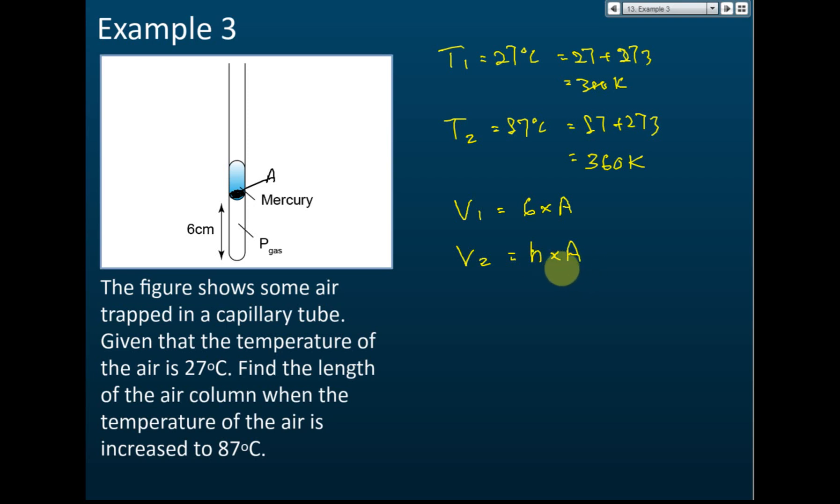By applying Charles' Law, we have V1 over T1 equal to V2 over T2. V1 is 6A, T1 is 300 - make sure that you convert Celsius to Kelvin - and V2 is hA, and the temperature is 360.